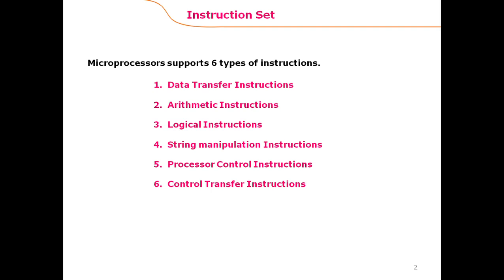Processor control instructions are responsible to change or control the state of the processor, for example clearing or setting the carry flag or the direction flag. Control transfer instructions transfer the flow of control from one place in the program to another, for example the jump instruction and call instruction.